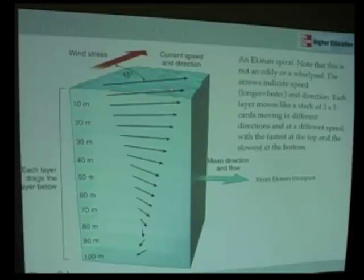That surface water, that layer moving, moves the layer beneath it through friction, but because that layer is moving, it begins also to turn to the right. The layer beneath it moves and it turns to the right, the layer beneath it, and so on, all the way down.